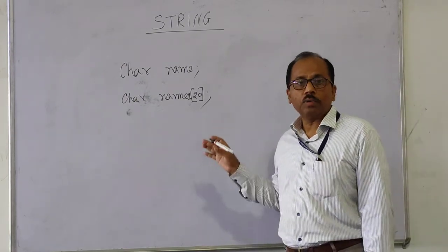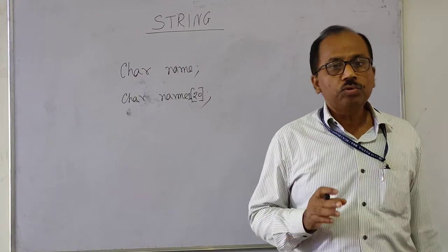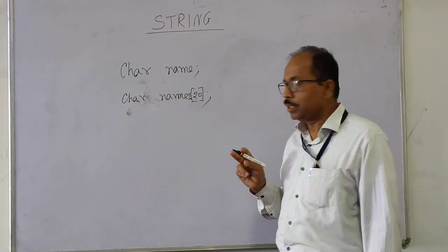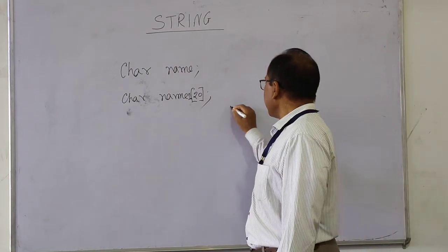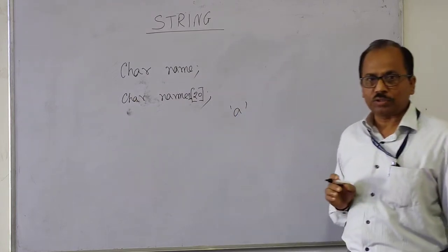To write a character constant, we use single quotation marks. If we write 'A', this is a character constant.